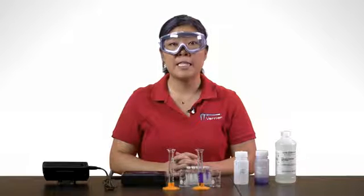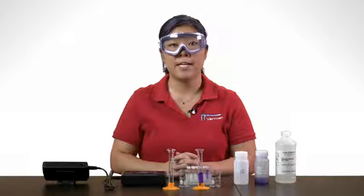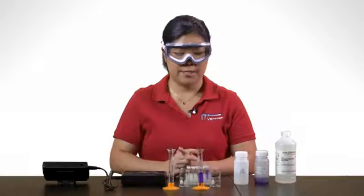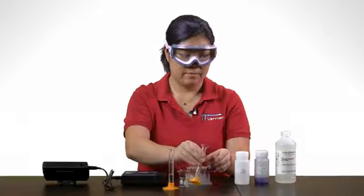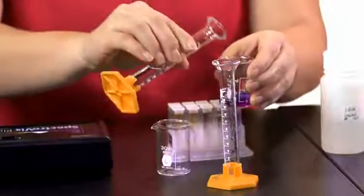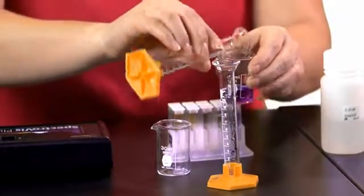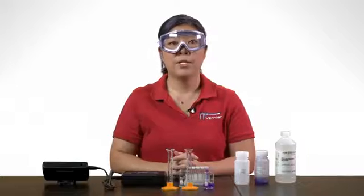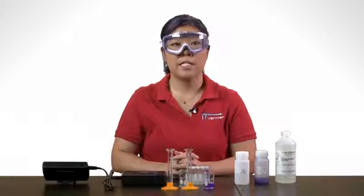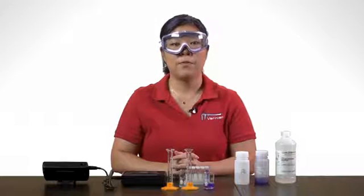As you can see in this demo, the purple color of the crystal violet fades as the reaction proceeds. One way to measure the rate of the reaction is by spectroscopy to follow the fading color.